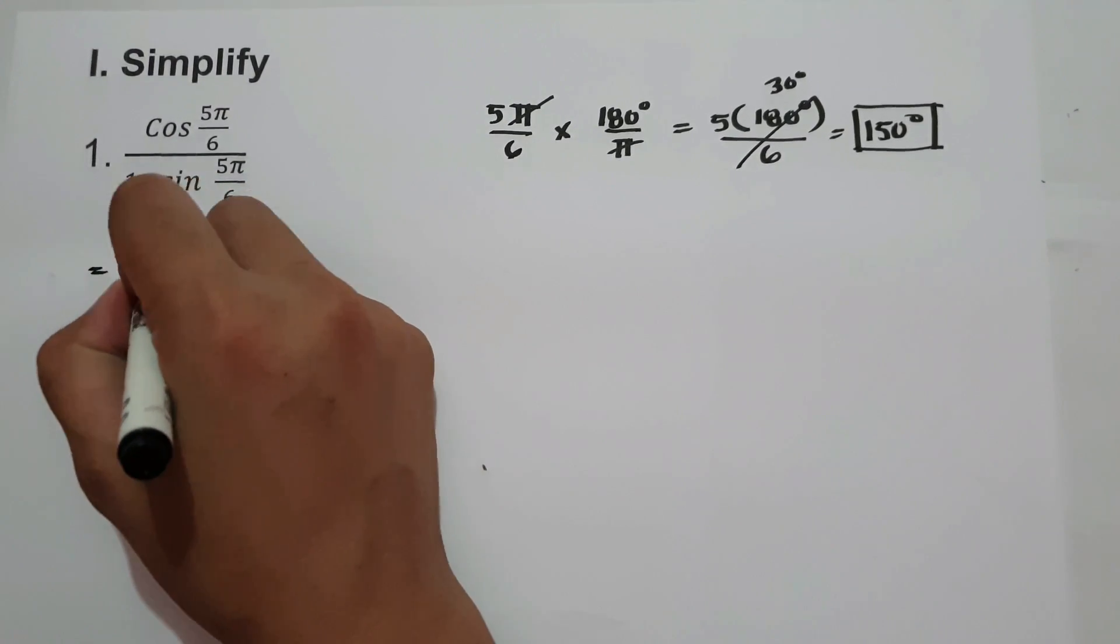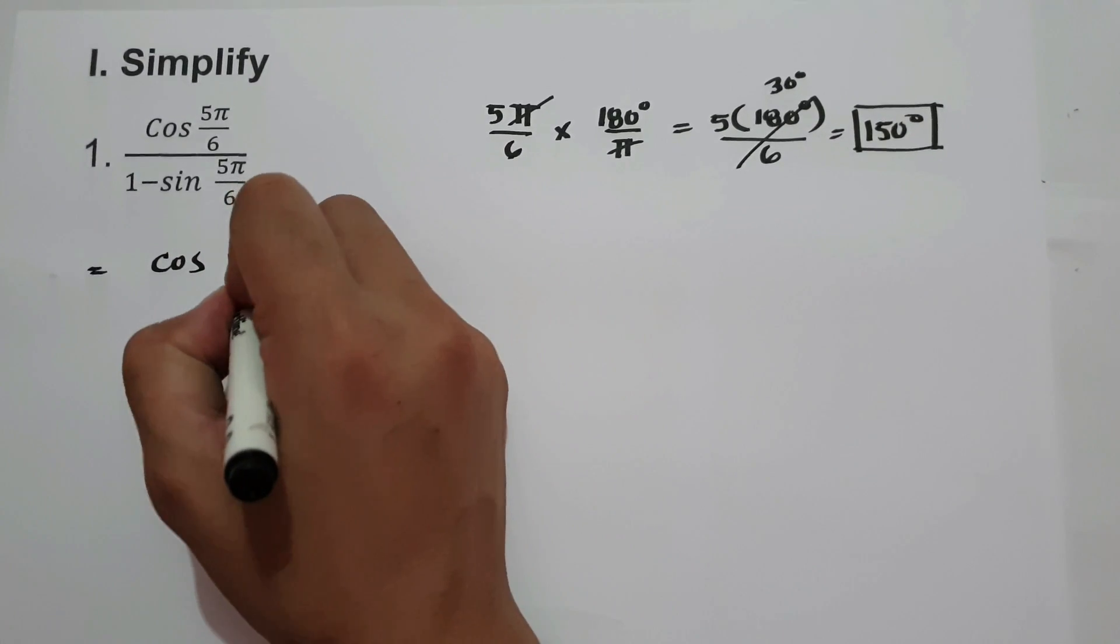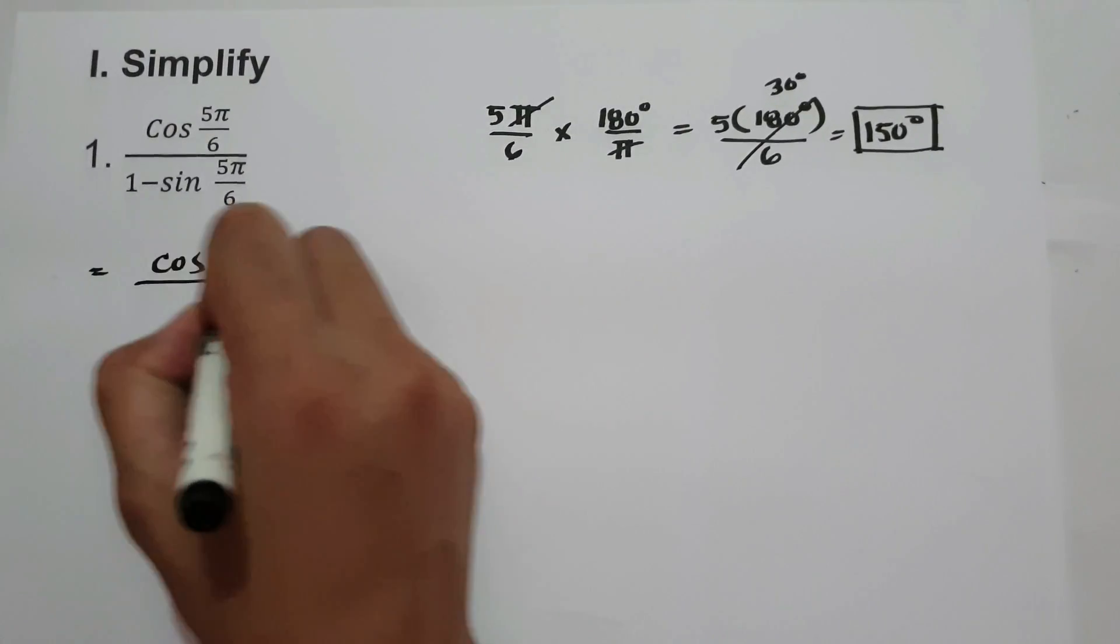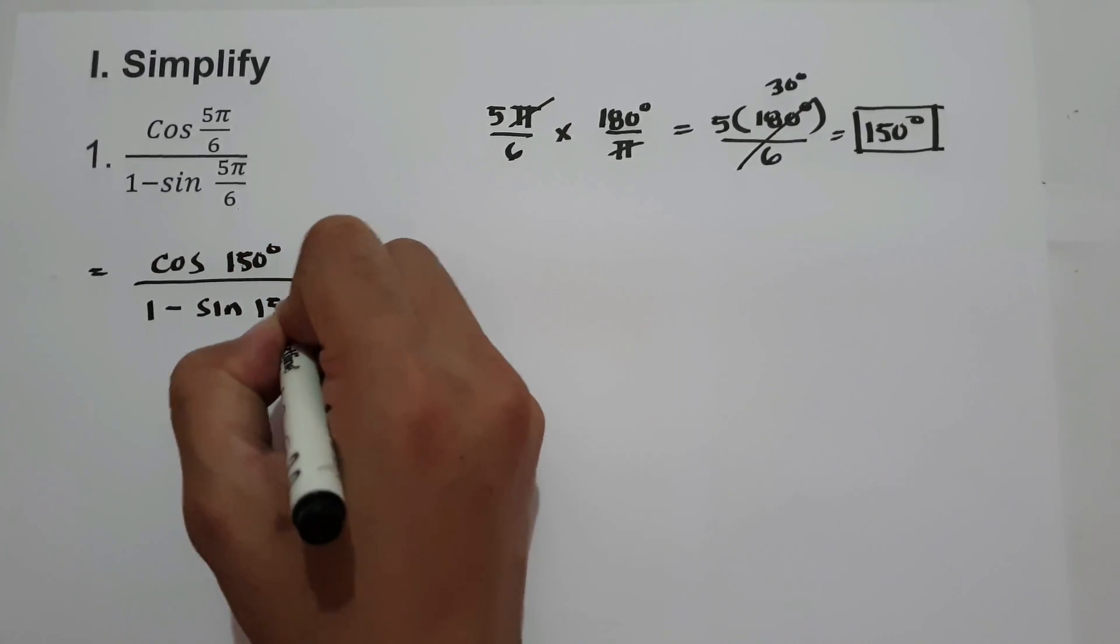So we have cosine 5π/6, that is 150 degrees, over 1 minus sine 150 degrees.